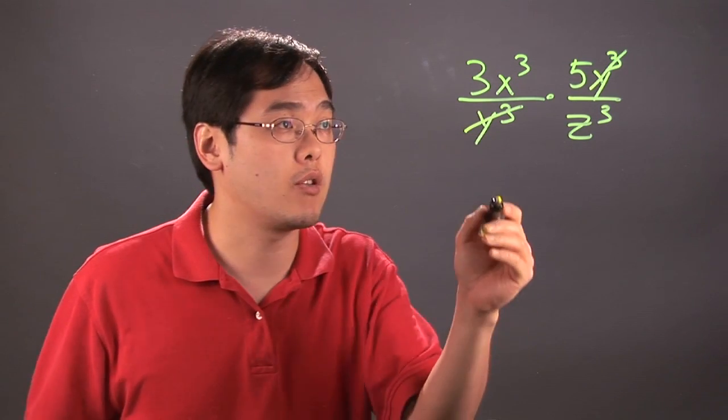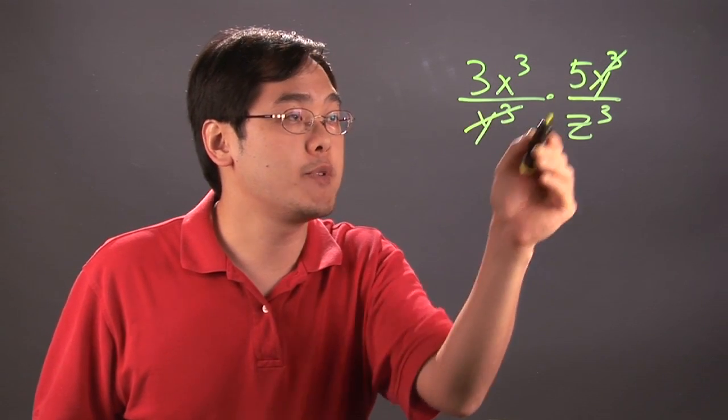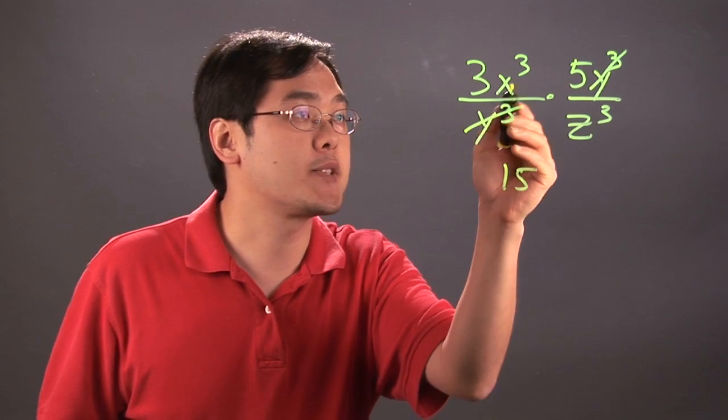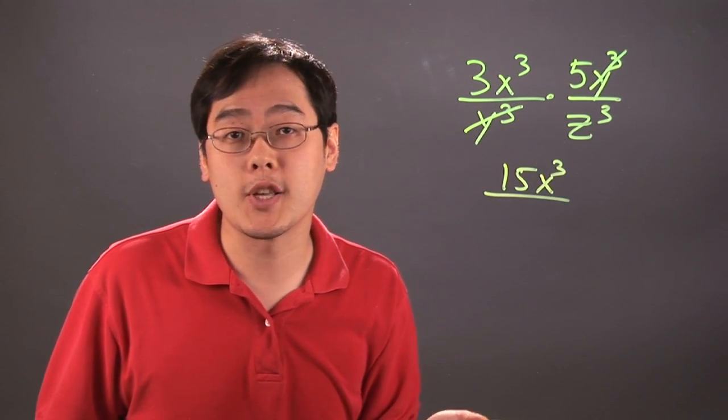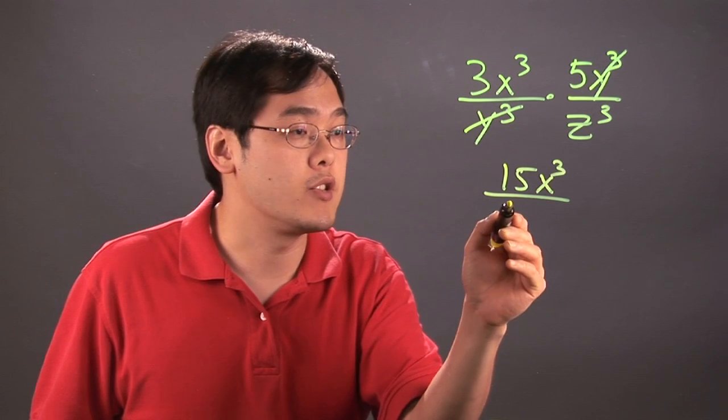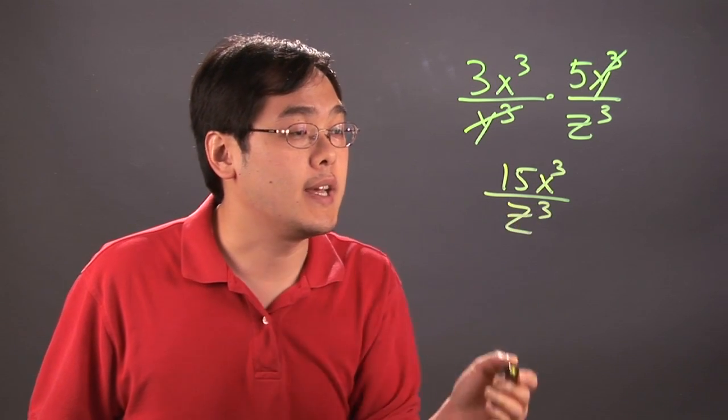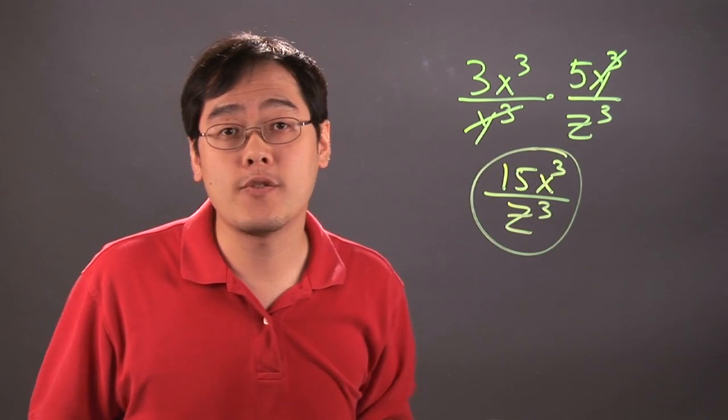So what you do is you just multiply across. So 3 times 5 is 15. x cubed doesn't really have anything else in the numerator, so the numerator is 15x cubed. And then the denominator is just left with z to the third and that's your final answer.